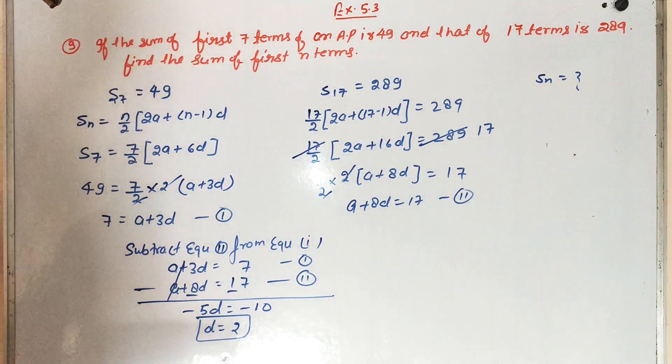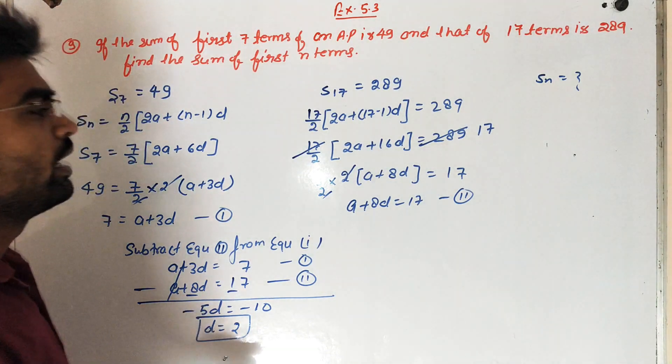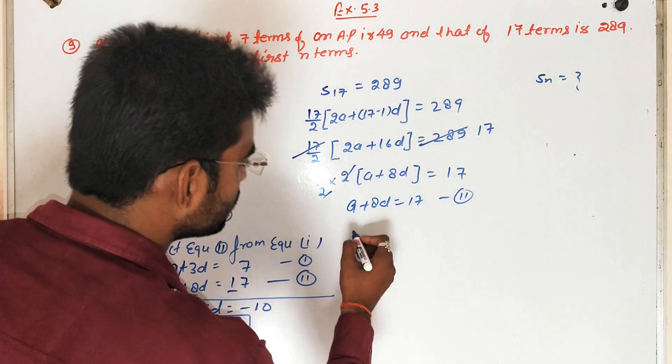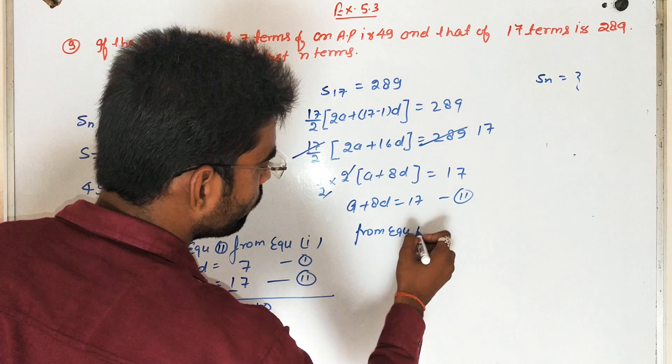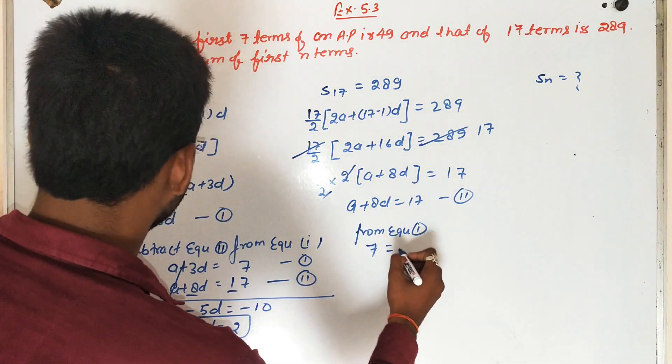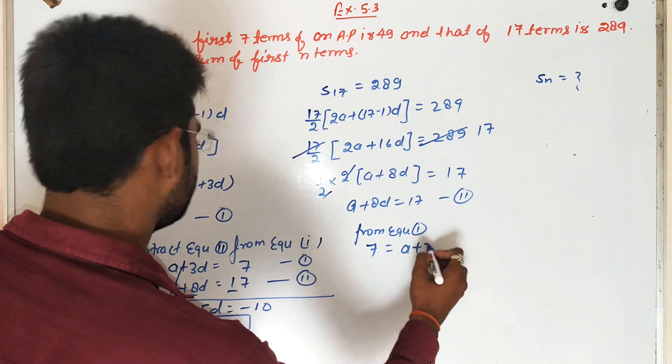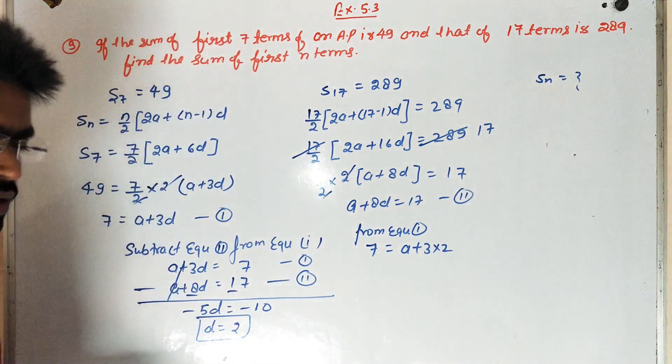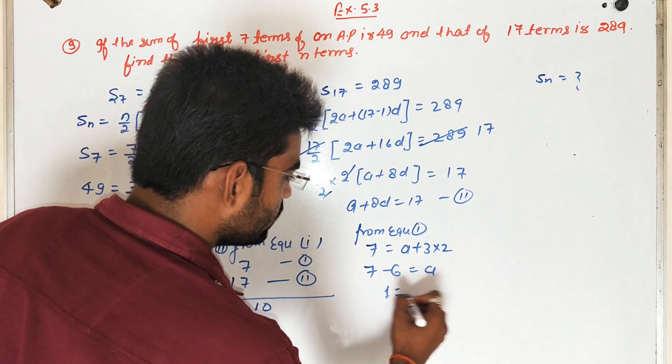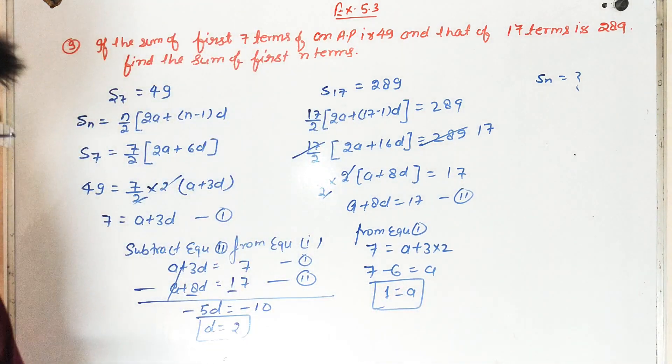To find A's value, substitute D's value from equation first. 7 is equal to A plus 3 into 2. 7 minus 6 is equal to A and 1 is equal to A. So first term find ho gaya, one find ho gaya.